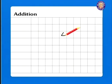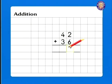Next, let's add 42 and 36. 2 plus 6 is 8. And 4 plus 3 is 7. So, the answer is 78.